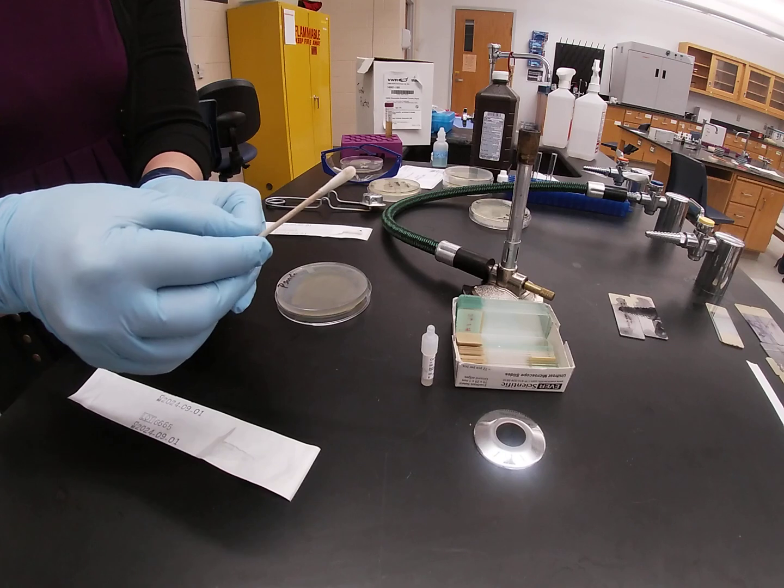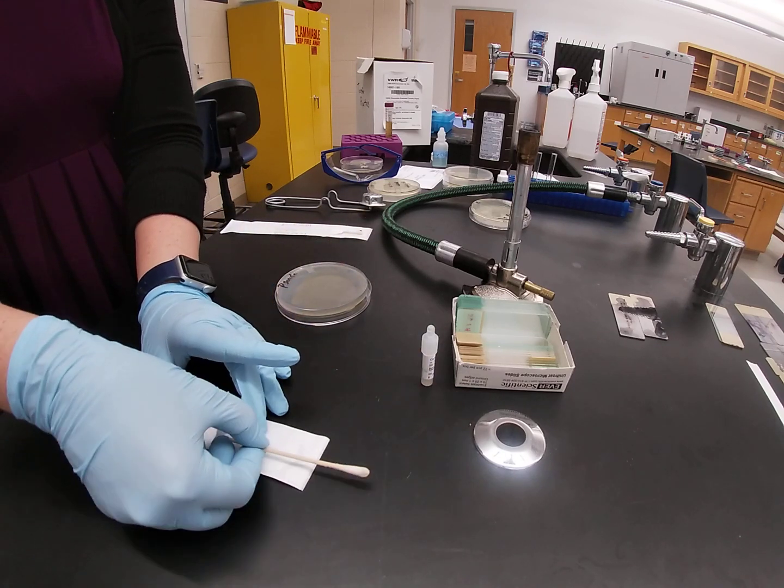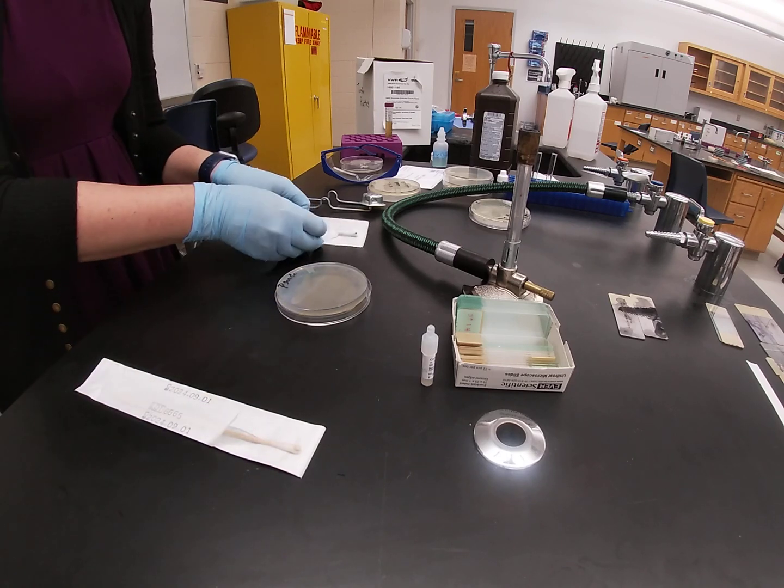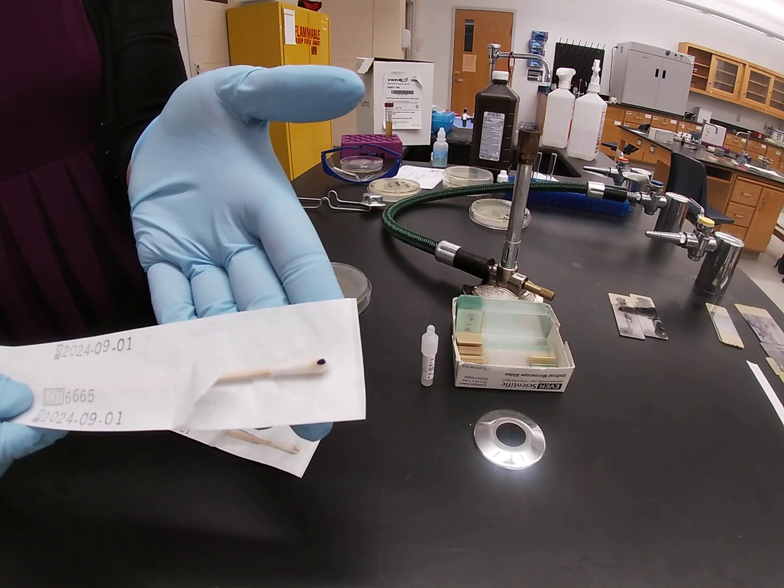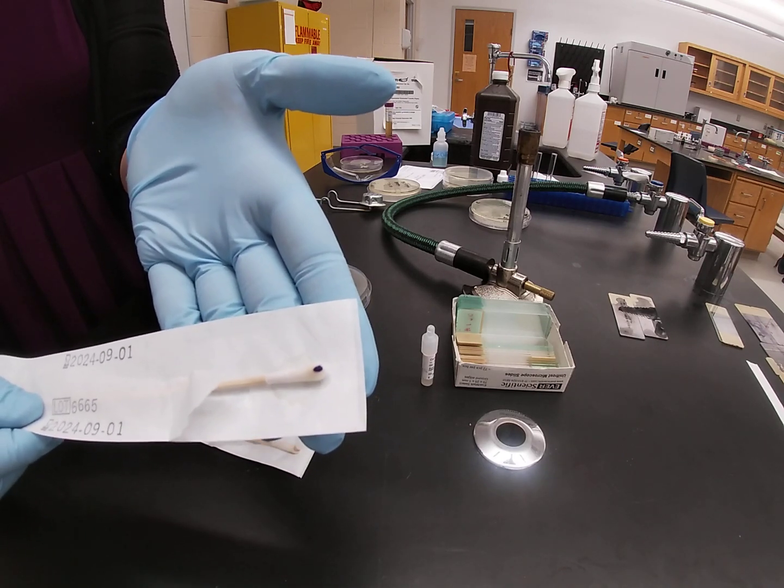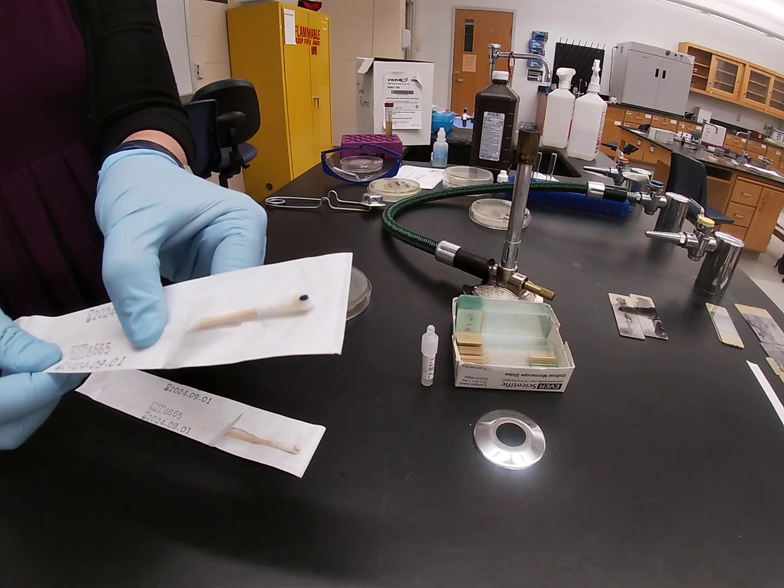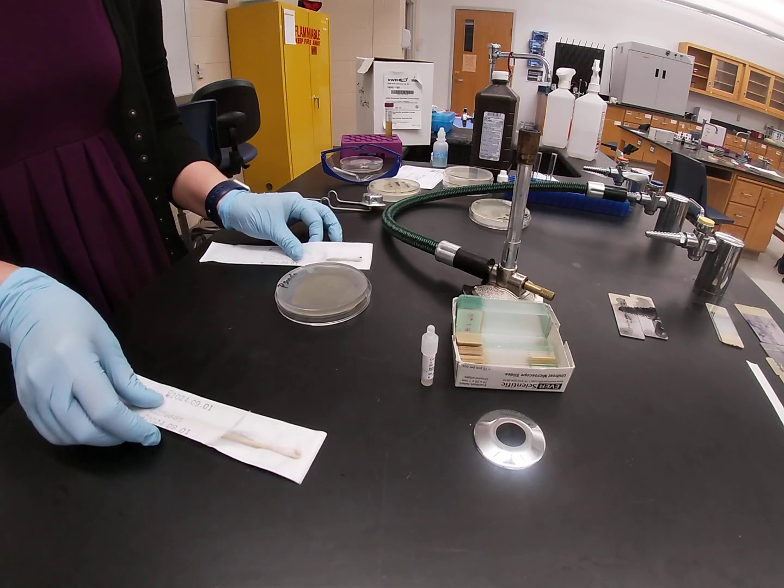As you can see on this Q-tip the color is changing, but I've made one a little bit earlier that has better results so that you can see them clearly. A positive oxidase test has a pretty serious color change to a dark purple, almost a black color. A negative oxidase test after a few minutes would still be completely and totally clean.